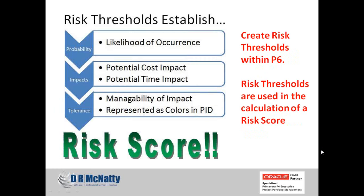The next item we'll talk about are the risk thresholds. Risk thresholds mainly facilitate the scoring component of P6 Release 8. When we establish thresholds to arrive at an overall score, I need to establish three different thresholds within P6. The first being probability — the likelihood of the risk occurring. The second is impacts — typically the potential cost impacts and potential schedule impacts. And then also a tolerance for the risk, which is basically how manageable we feel the risk is going to be.